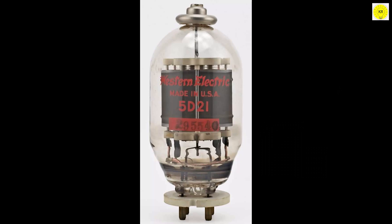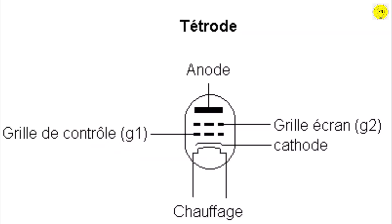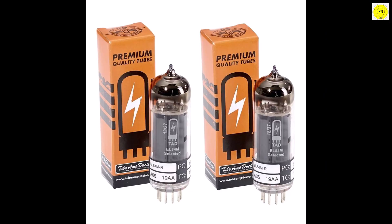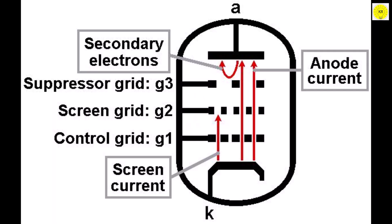Tetrode: Tetrode vacuum tubes have an additional electrode called the screen grid between the control grid and the anode. The screen grid helps improve the tube's performance and reduce certain issues, such as screen grid current. Pentode: Pentode vacuum tubes have two additional electrodes compared to triodes — the screen grid and the suppressor grid. The suppressor grid helps reduce electron flow between the screen grid and the anode, improving efficiency and reducing distortion.